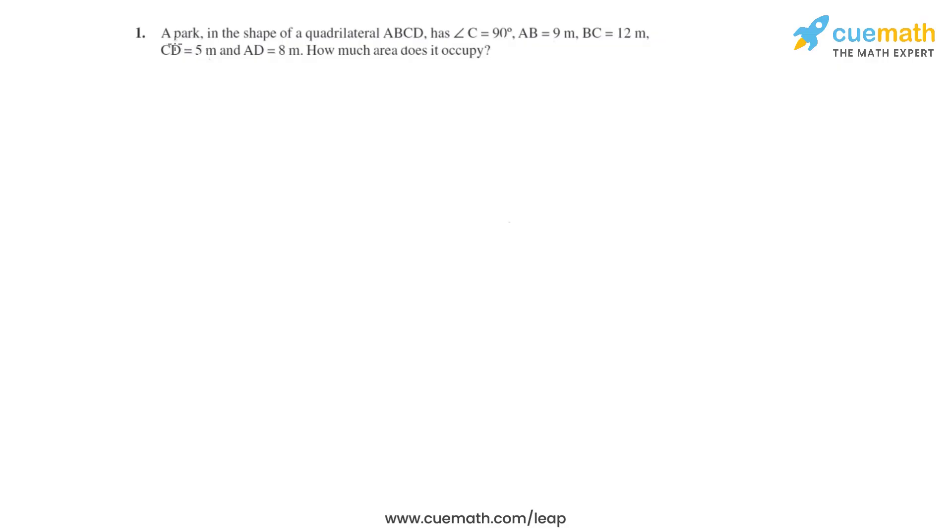Question number one: A park is in the shape of a quadrilateral ABCD, which has angle C equal to 90 degrees, and the four side lengths are given as AB equals 9m, BC equals 12m.